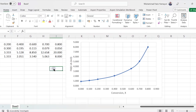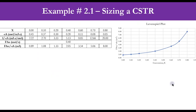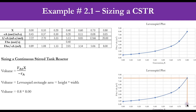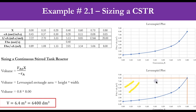We select the FA0 over minus rA plot and add axis titles: X on the horizontal axis and FA0 over minus rA in cubic meters on the vertical axis. Now we find the reactor volume. For the CSTR, we take a point — for example at X equals 0.8 — connect it to the curve, draw lines to form a rectangle, and this rectangular area represents the CSTR volume. Multiplying 0.8 by 8 gives the CSTR volume of 6.4 cubic meters at 80% conversion. Similarly, at 40% conversion, the value is approximately 0.4 times 2, giving about 0.8 cubic meters or 800 cubic decimeters.